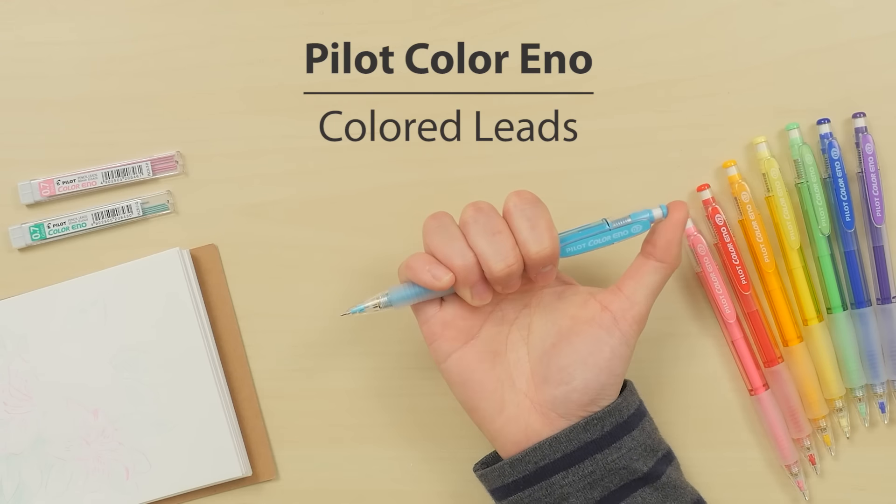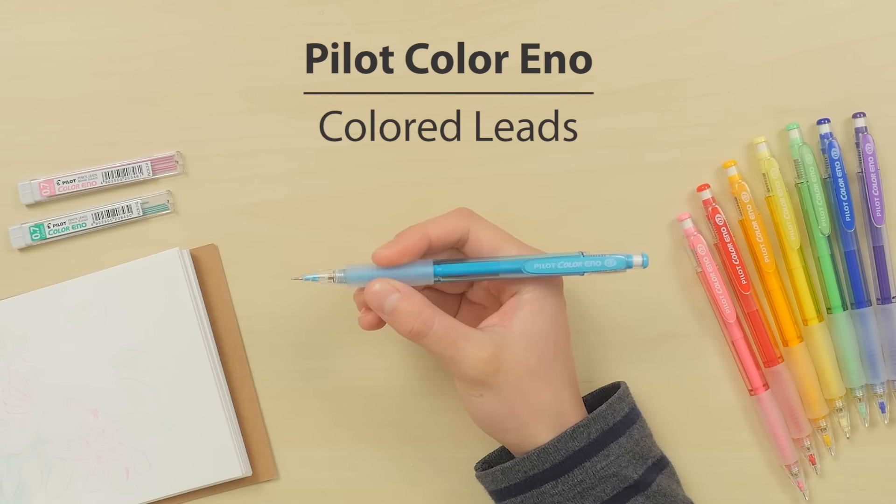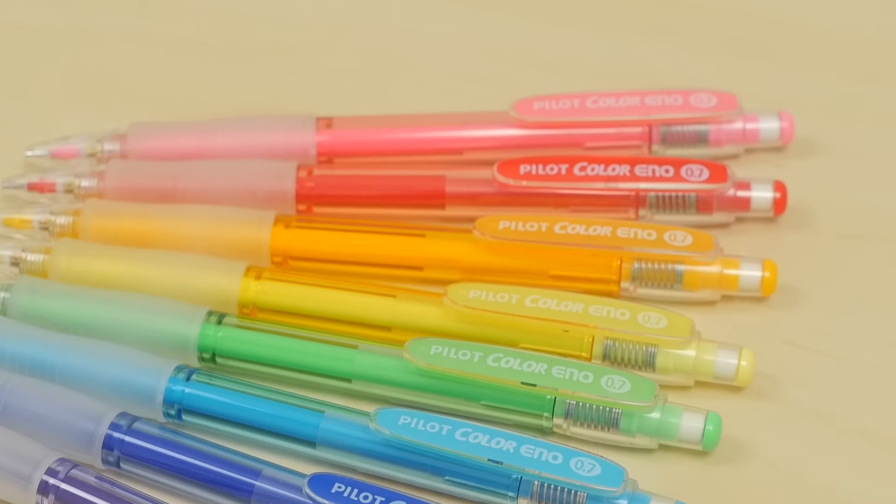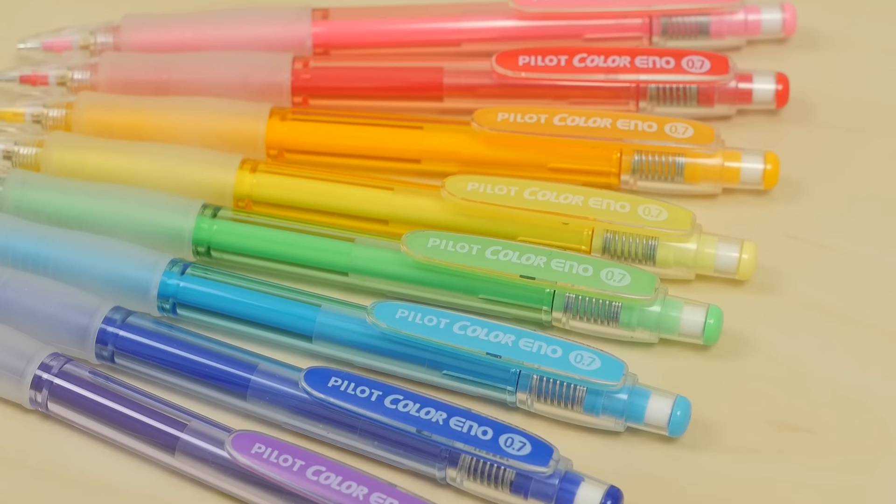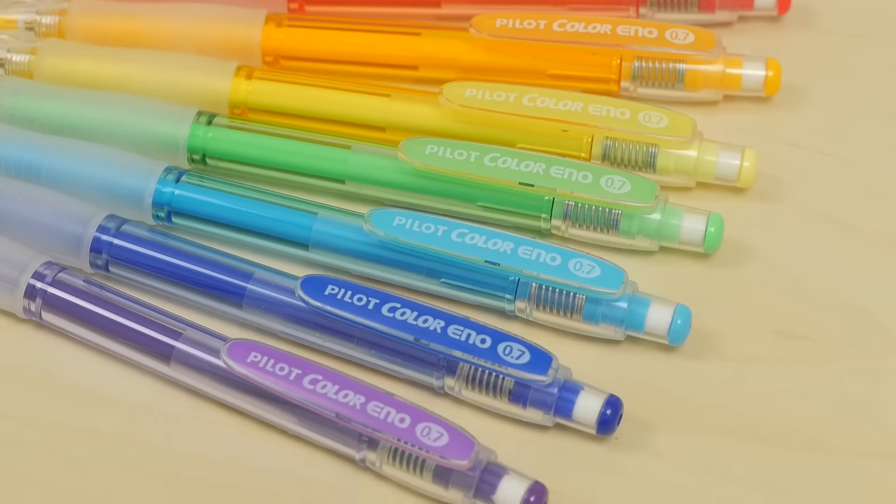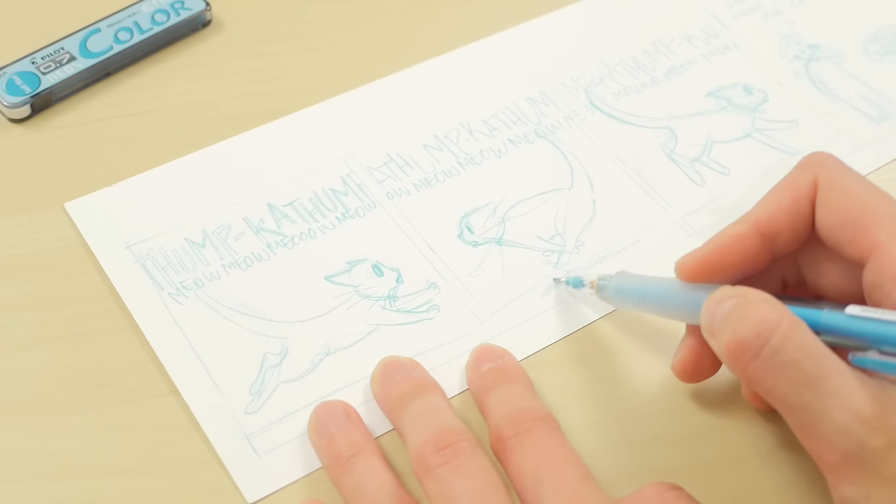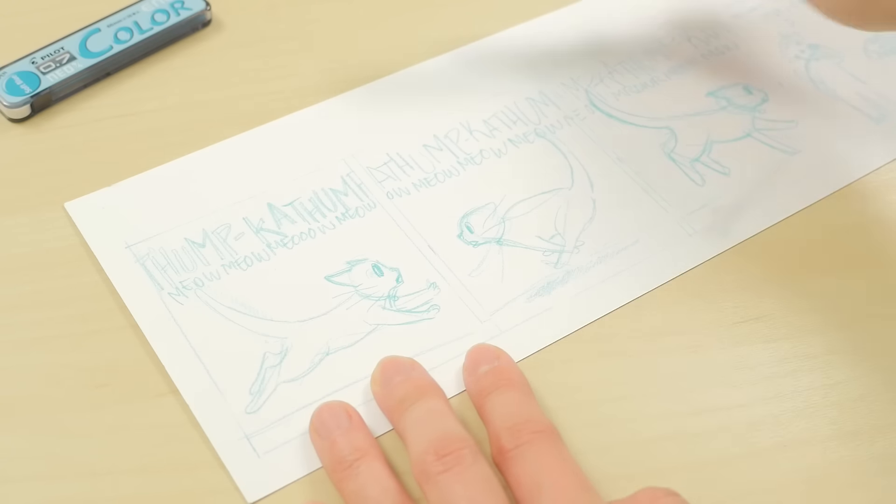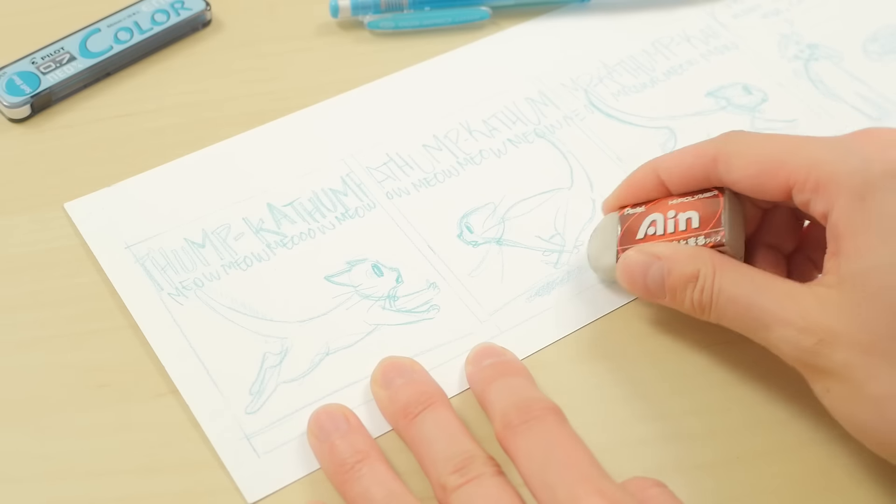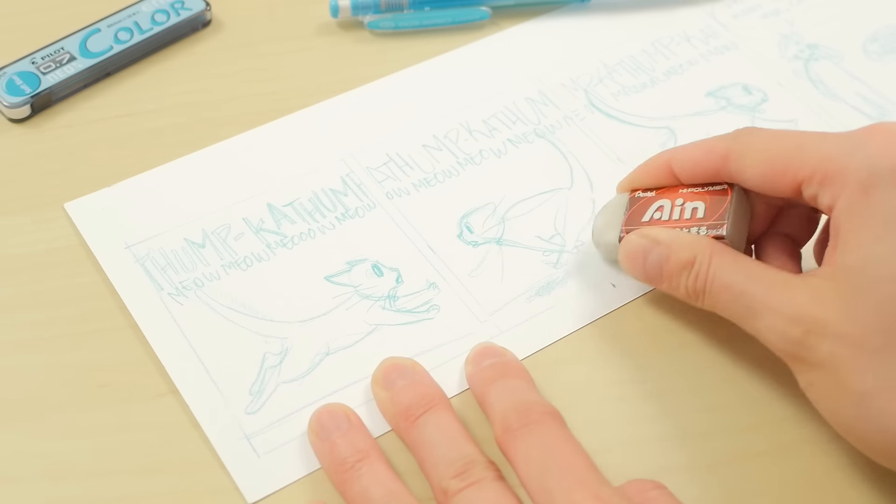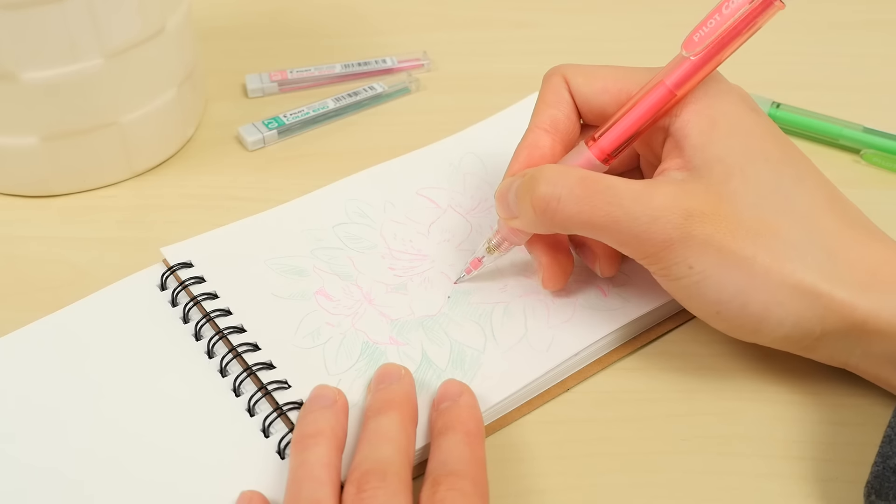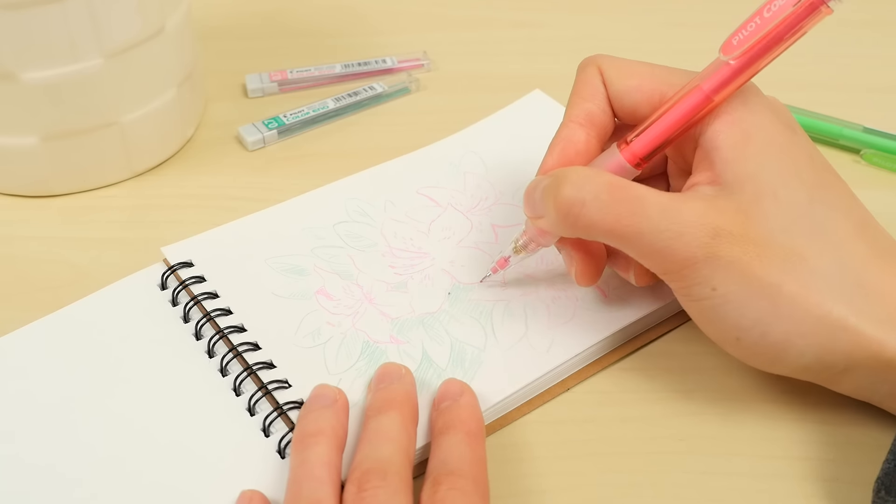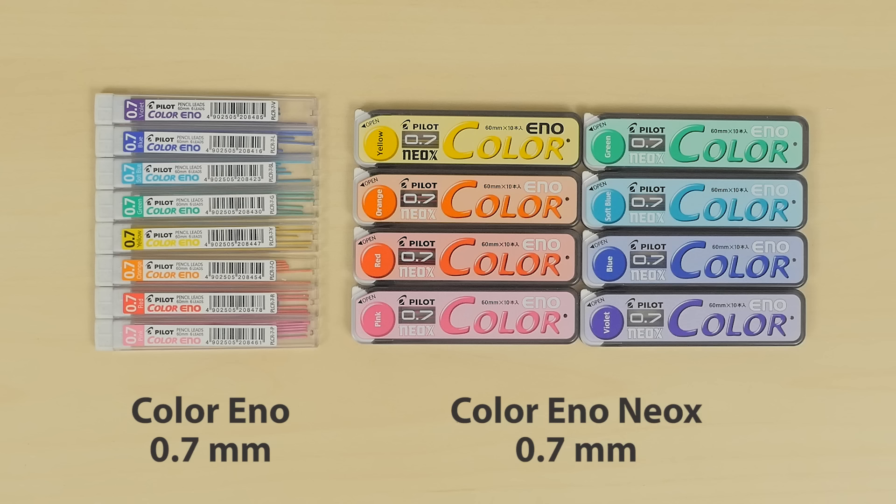If you want to branch out from the usual gray of graphite, the Pilot Color Eno has you covered. This line offers eight lead colors with bodies to match. The non-repro soft blue color is popular amongst artists. Unlike colored pencils, these colored leads erase extremely well. All of the colors are great for sketching and storyboarding, and matching refill leads are also available for purchase.